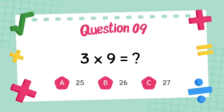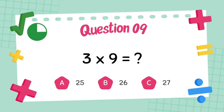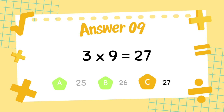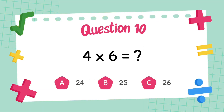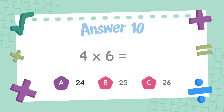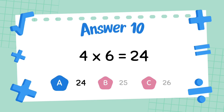What is 3 multiply 9? The answer is twenty-seven. What is four multiply six? The answer is twenty-four.